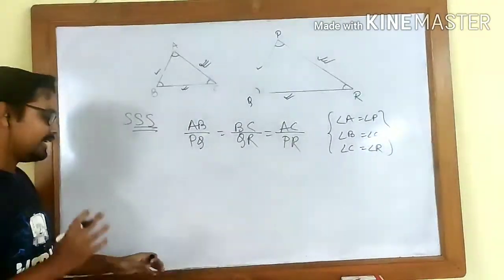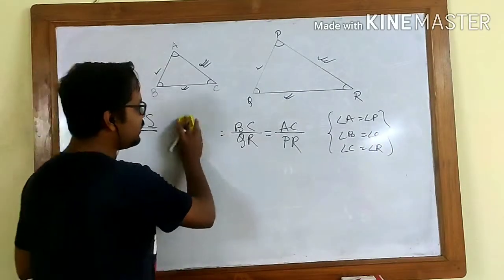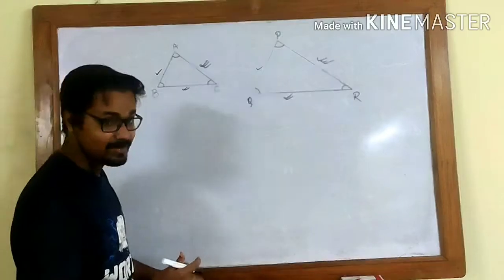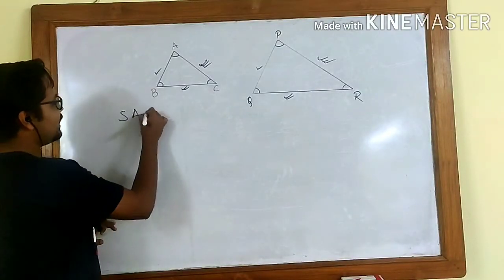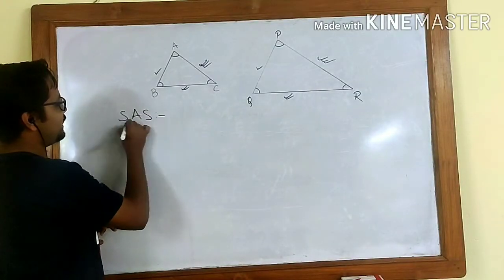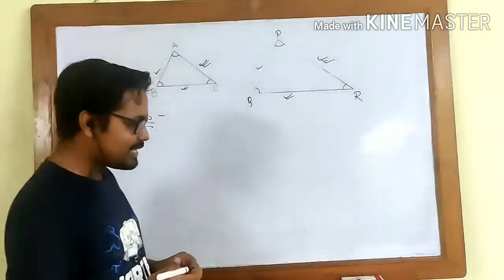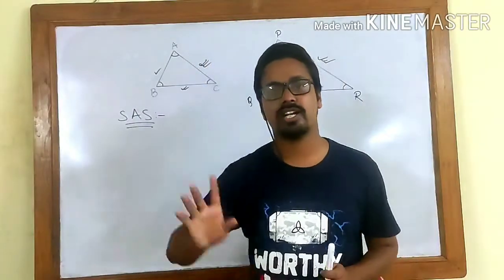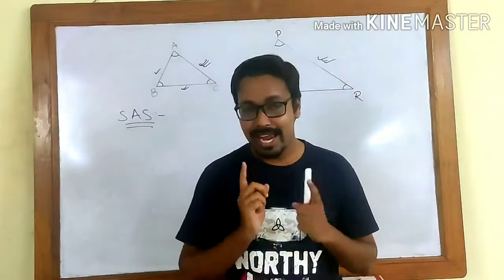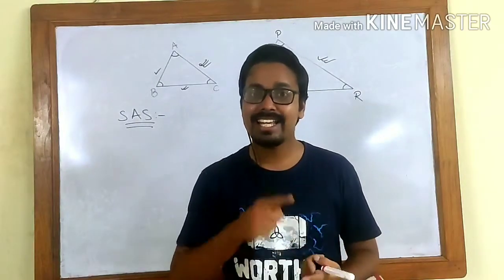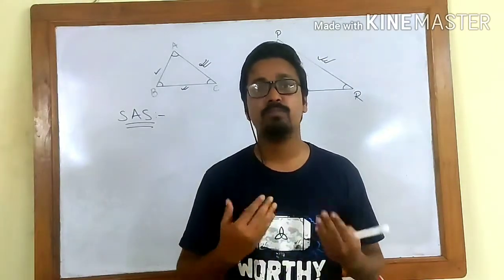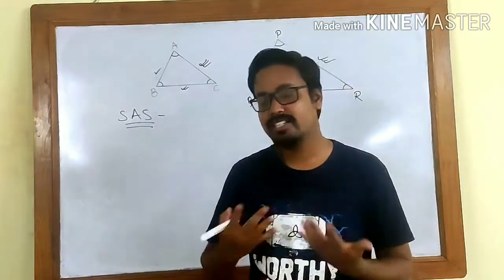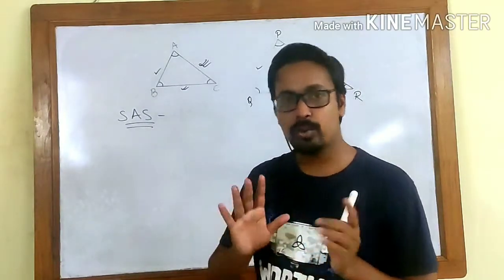The third criteria is a bit different. It is called the Side-Angle-Side criteria, or the SAS postulate. It says that if two corresponding angles of a triangle are equal and the sides containing that angle are in proportion, then the two triangles are similar.